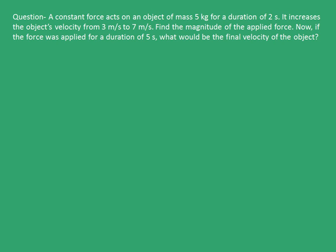A constant force acts on an object of mass 5 kg for a duration of 2 seconds. It increases the object's velocity from 3 meters per second to 7 meters per second. Find the magnitude of the applied force. Now, if the force was applied for a duration of 5 seconds, what would be the final velocity of the object?